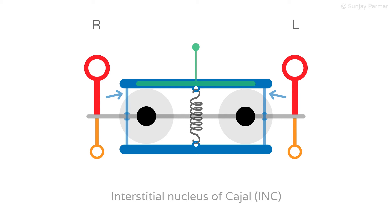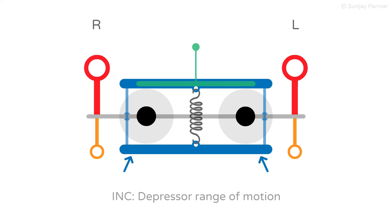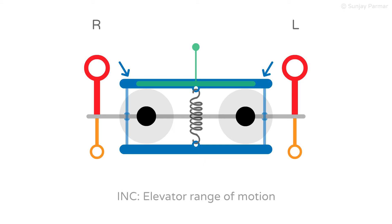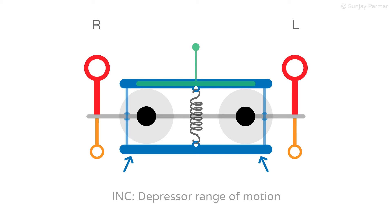The INC also innervates vertically acting extraocular muscle nuclei ipsilaterally and contralaterally, meaning it can coordinate eye movement bilaterally. This is shown in the analogy by the blue poles with the lift elevator mechanism attached to the grey bar. The INC controls how far up and how far down you can see, which we refer to as the vertical range of motion. This is shown by the blue boards, with the bottom blue board showing how far the eyes can look down and the top blue board showing how far the eyes can look up. The spring attaching the boards together is not an anatomical structure, but its purpose will make sense when we talk about INC pathologies. Although the INC supplies upward and downward eye movement, it is believed that the INC gives stronger ipsilateral input to the depressor eye muscle subnuclei. This will become relevant when discussing pathologies such as dorsal midbrain syndrome, also known as Parinaud syndrome.